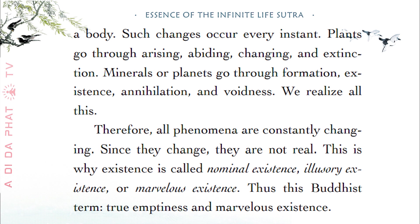Plants go through arising, abiding, changing, and extinction. Minerals or planets go through formation, existence, annihilation, and voidness. Therefore, all phenomena are constantly changing. Since they change, they are not real. This is why existence is called nominal existence, illusory existence, or marvelous existence — thus the Buddhist term: true emptiness and marvelous existence.